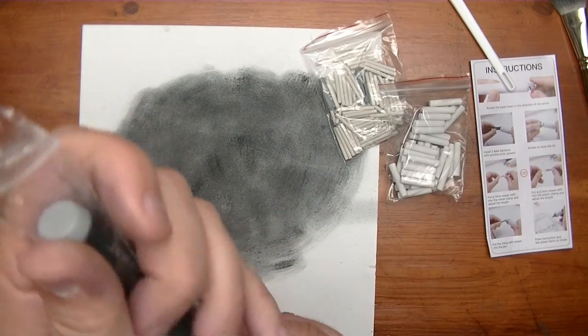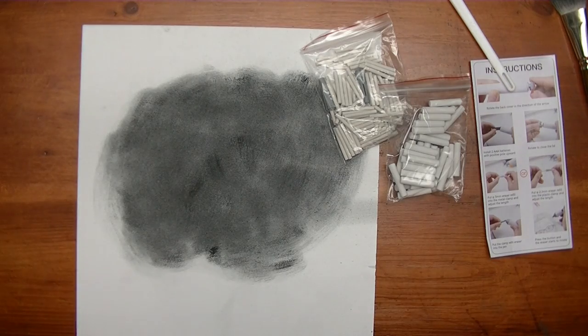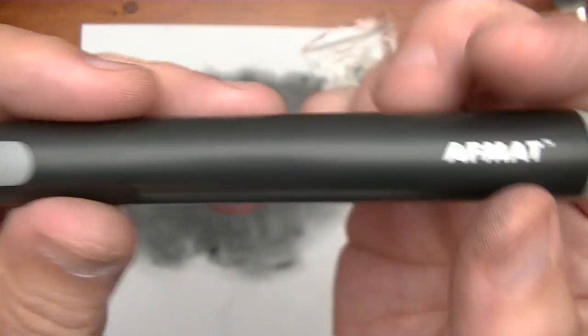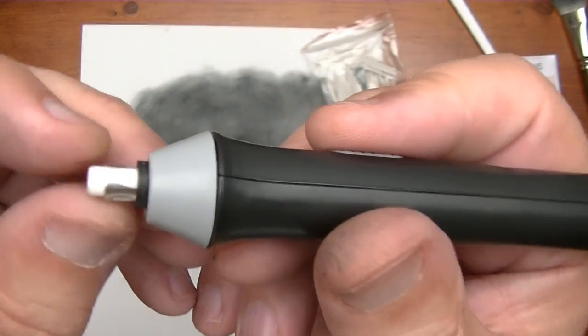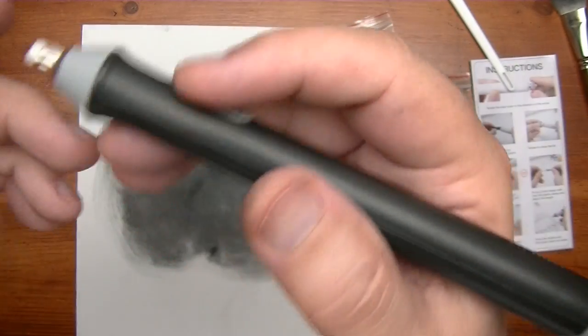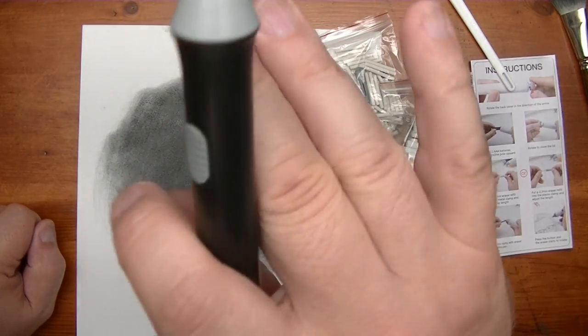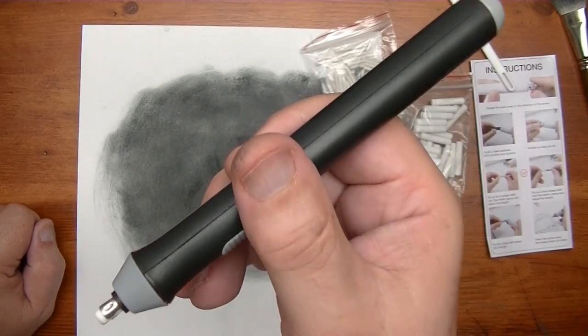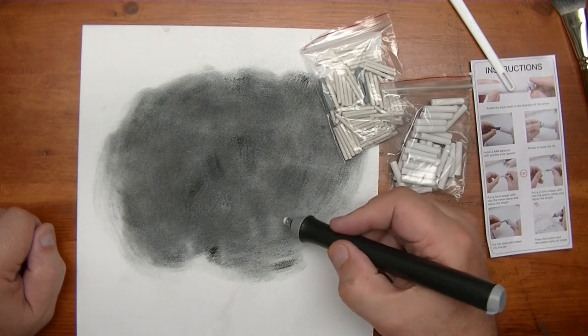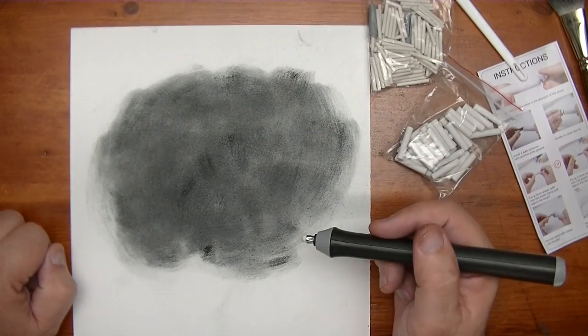It comes with this brush which I guess is so you can brush after you've left eraser debris all over the place. And then you have this nice little pencil case that you can keep all this stuff in. Let's take a close look at this electric eraser from AFMAT.